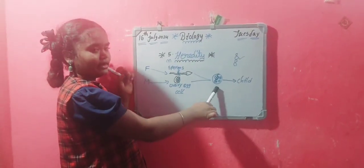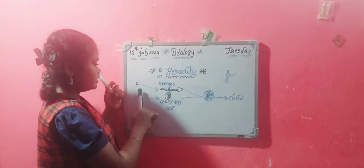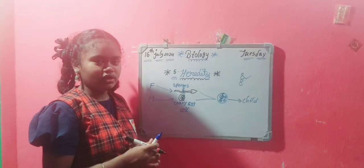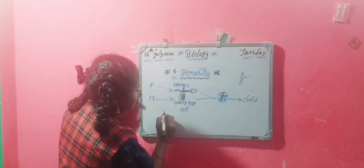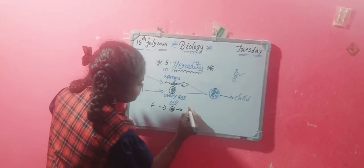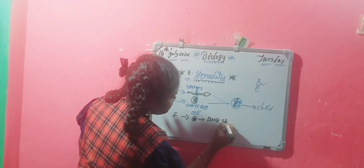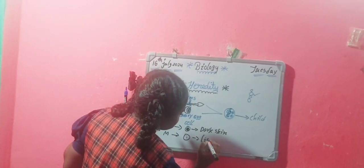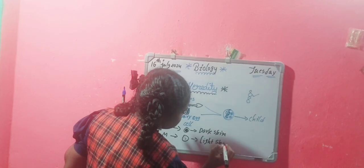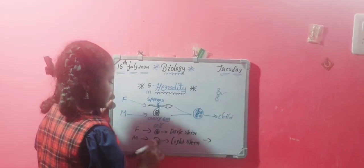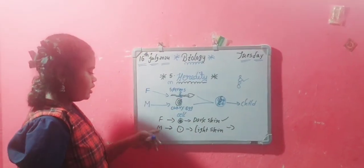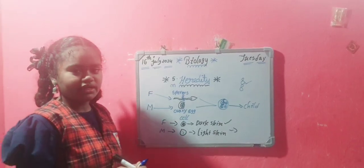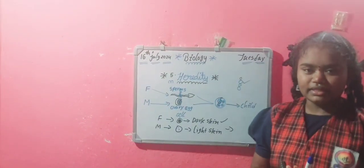Here we can observe that the zygote has both father traits and mother traits. But the children come out with only one trait. For example, the father releases dark skin and the mother releases light skin, and the child is born with dark skin. So here the mother and father both try to give their traits, but only one trait comes out. We give so many traits to children, but only one trait comes out similar in the children.